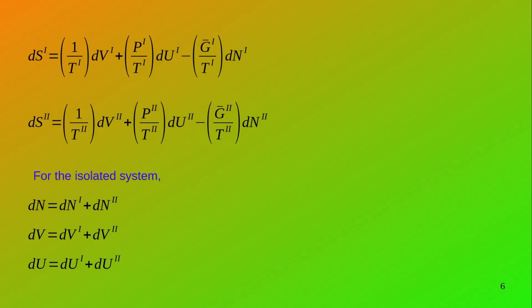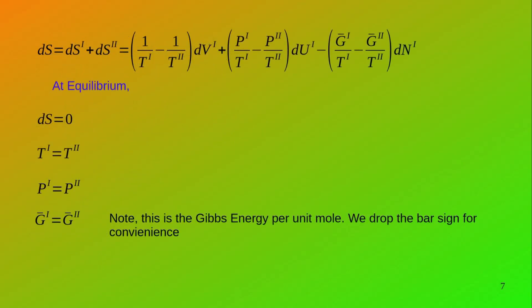For such an isolated system, the total change in number of moles is zero: dn₁ + dn₂ = 0. The total change in volume is also zero: dV₁ + dV₂ = 0. A similar reasoning applies to the change in internal energy — since it's an isolated system, the total change in internal energy is also zero: dU₁ + dU₂ = 0.